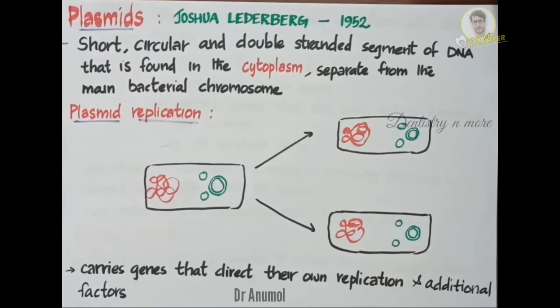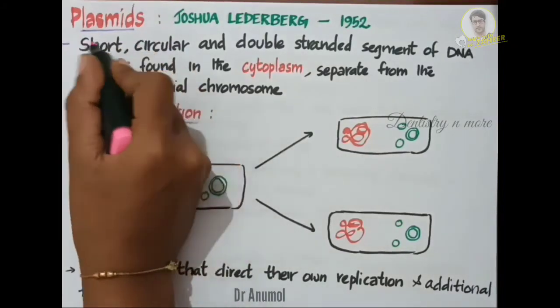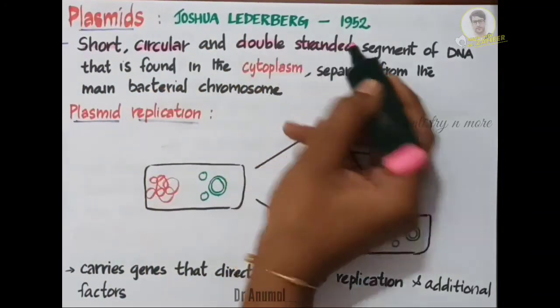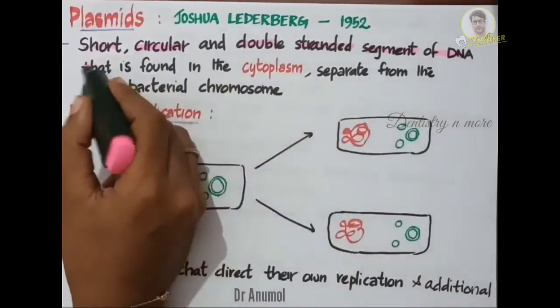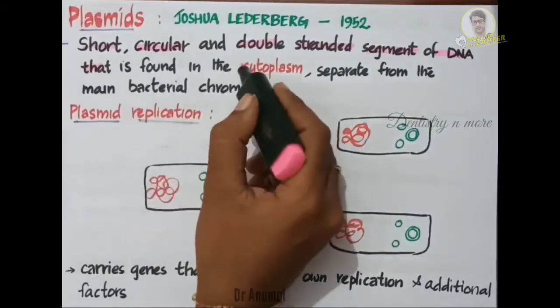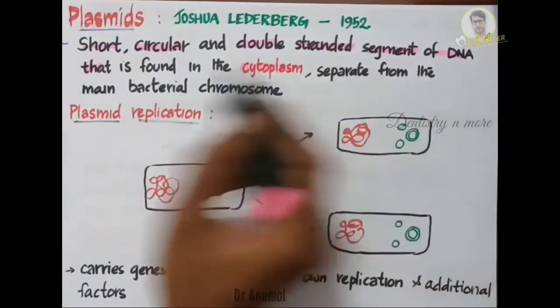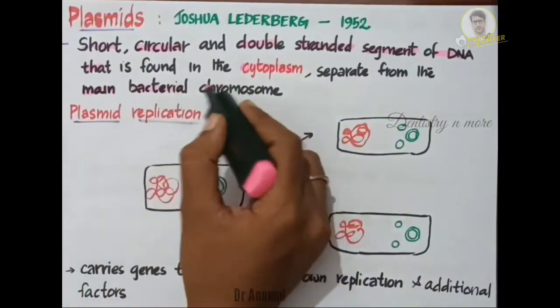So what are plasmids? They are short, circular and double-stranded segments of DNA that are found in the cytoplasm, separate from the main bacterial chromosome.